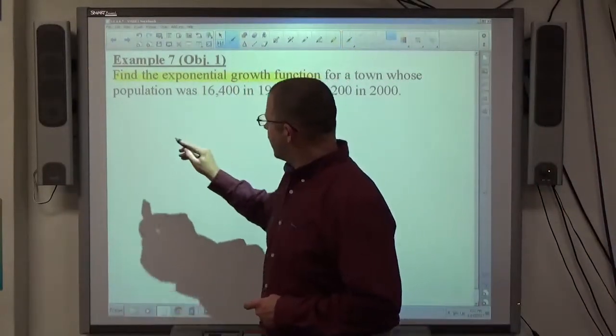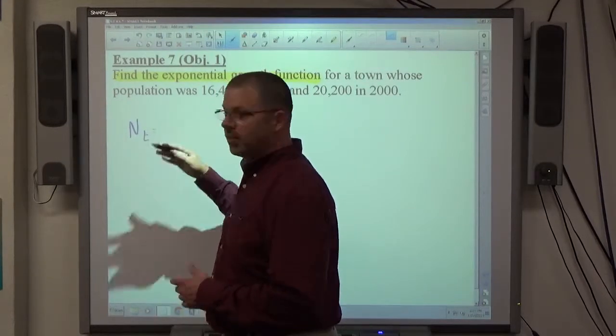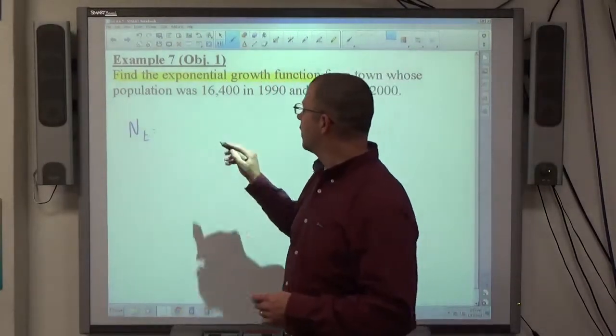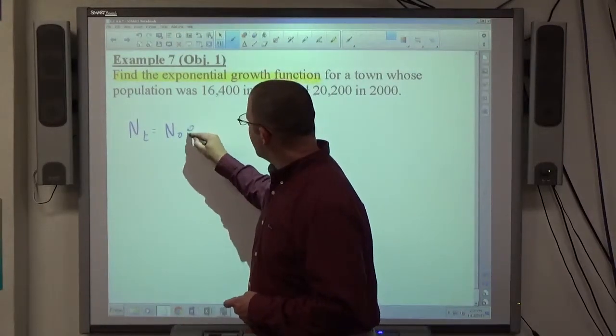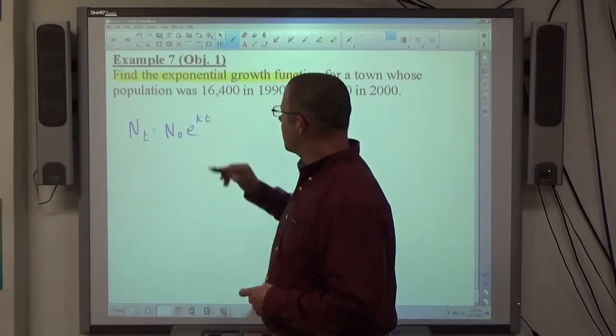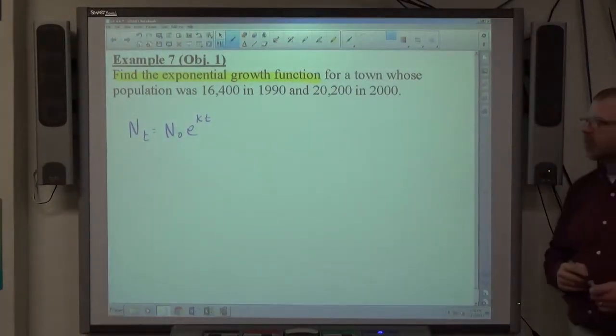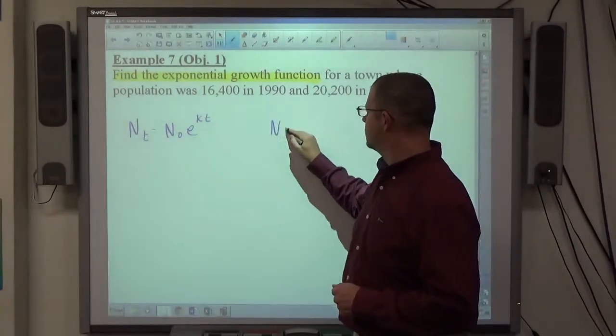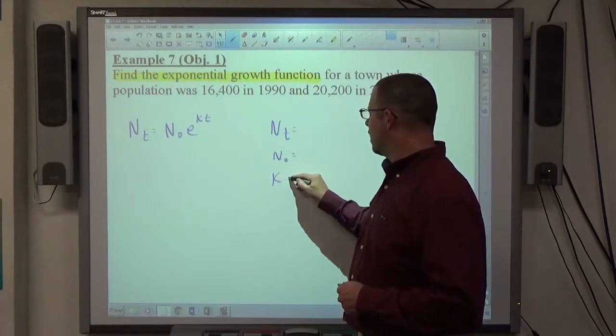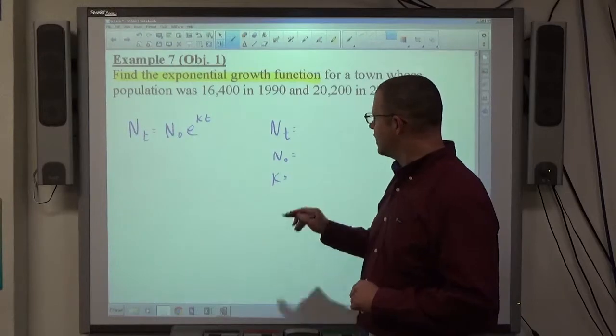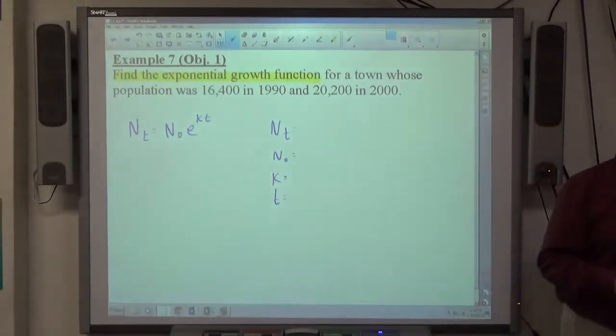If you look at the sheet I gave you, the exponential growth function says that the final amount of anything that's growing or decaying exponentially is equal to the initial amount of that object times e to the kt power, where N sub t represents the final amount, N sub 0 is the initial amount. K is some constant of growth or decay, and t is time in whatever unit of time you want to deal with.